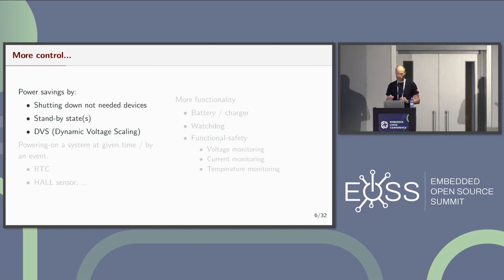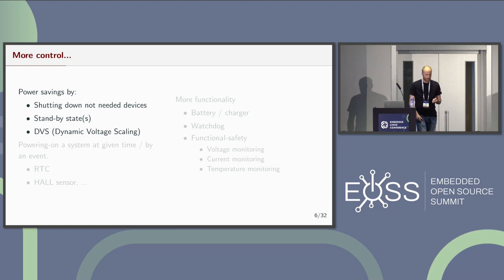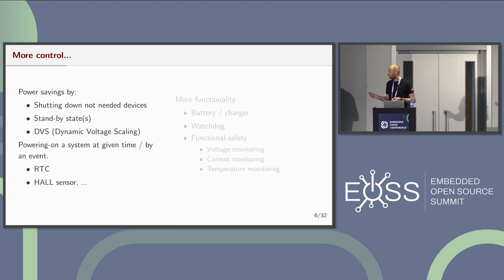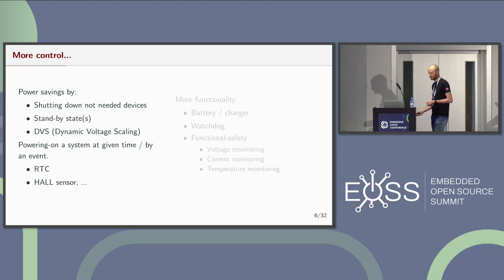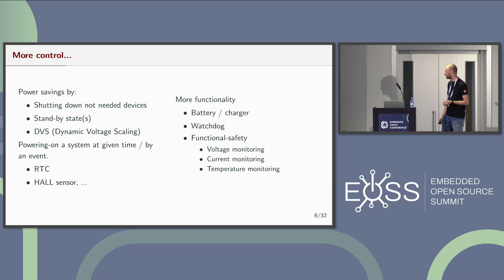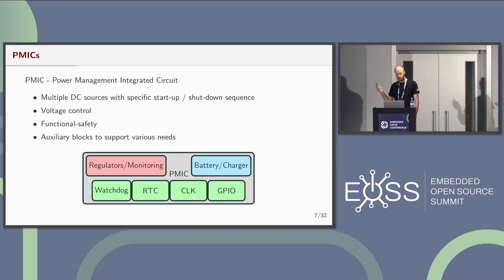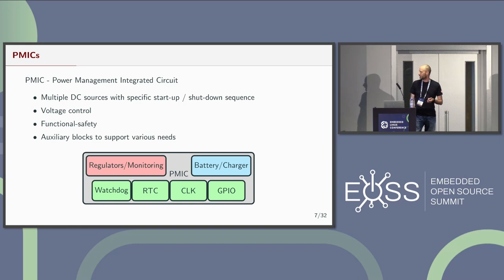On top of these timing and power requirements, which are critical, there are also functional requirements for powering up and shutting down devices. People want power savings — my wife tells me we need to do power savings because she pays the electricity bill. People want to wake up their systems at a given time, when a lid is opened, or have battery-operated setups where batteries are charged. There is a need for watchdogs, functional safety, and monitoring hardware status. This is the need that has resulted in PMICs.